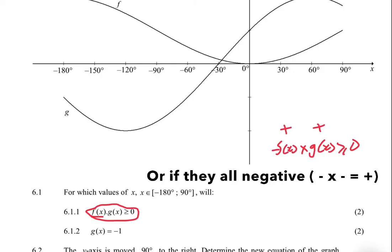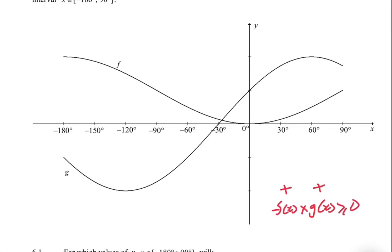Because if one between the two is negative, then the product will not be greater or equal to zero. It's either both positive, or one is positive and the other one is zero. So let's look for an interval where that is true.